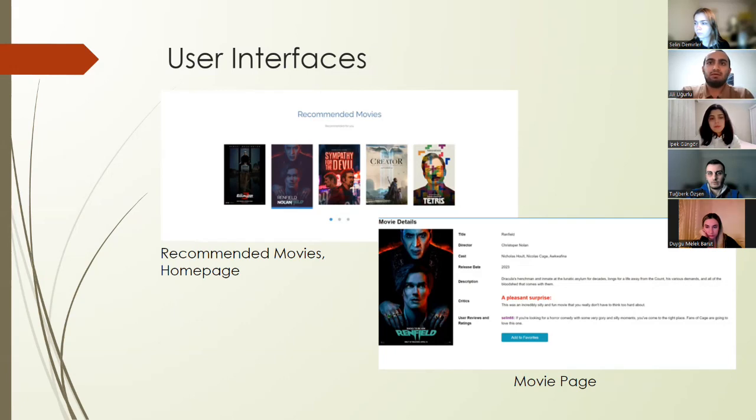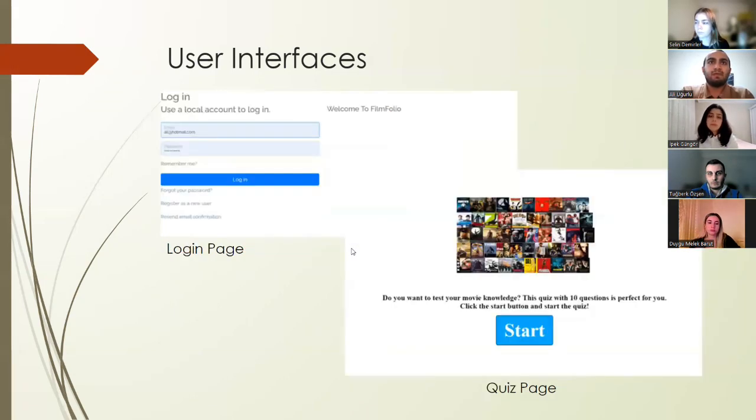And lastly, we have user reviews and ratings, which is, the comments are getting done by our users. And also, in here, we have a button. And with this button, our users can add the movie to their favorite list. Lastly, we have login page. Login page is really simple. You need to sign up first. And it's required username, email, and password. So, that's all for my part. Now, my scientist will continue.